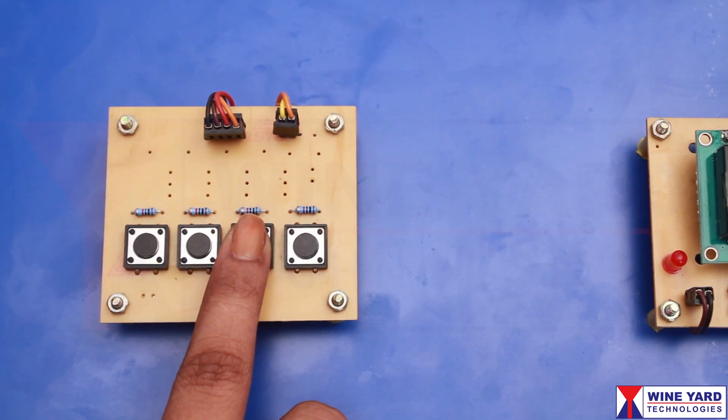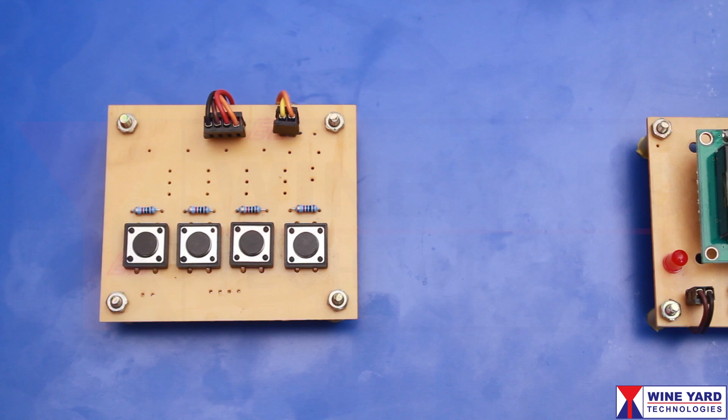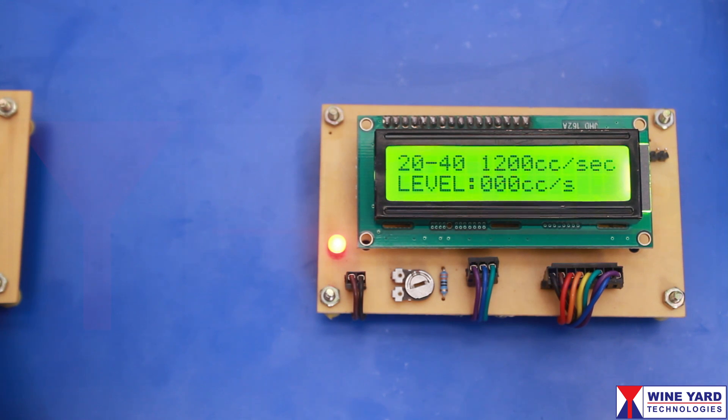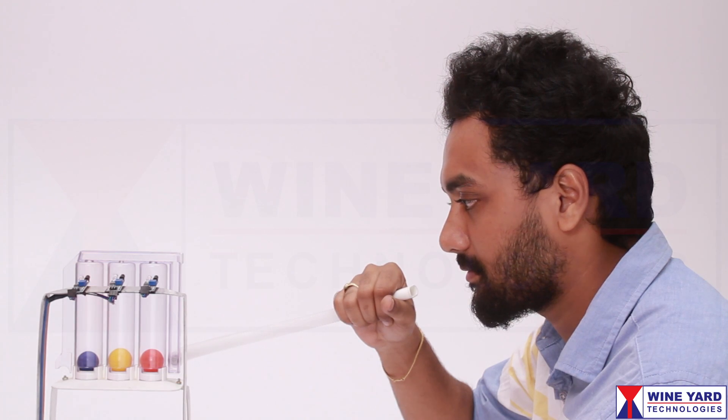Now, I am pressing this switch as the user age is under this category. The reference value is 1200 cubic centimeters per second for healthy lungs. Now, the user has to inhale using this tube.